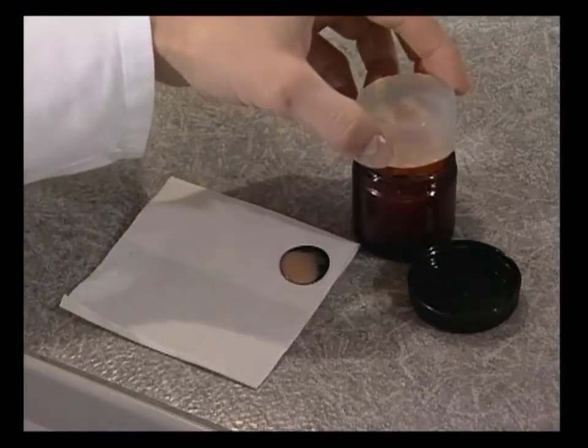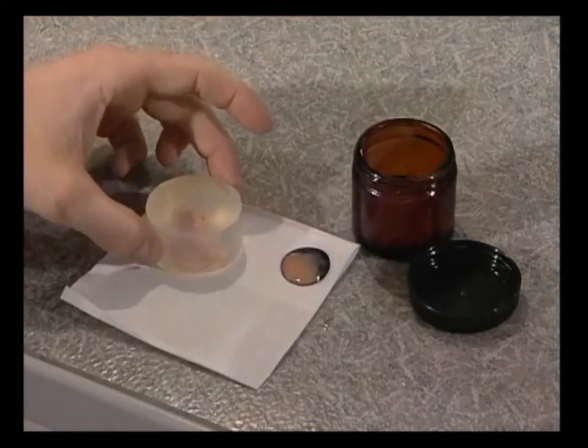The negative form is placed the other way around on a paper towel which absorbs any material that is still liquid.